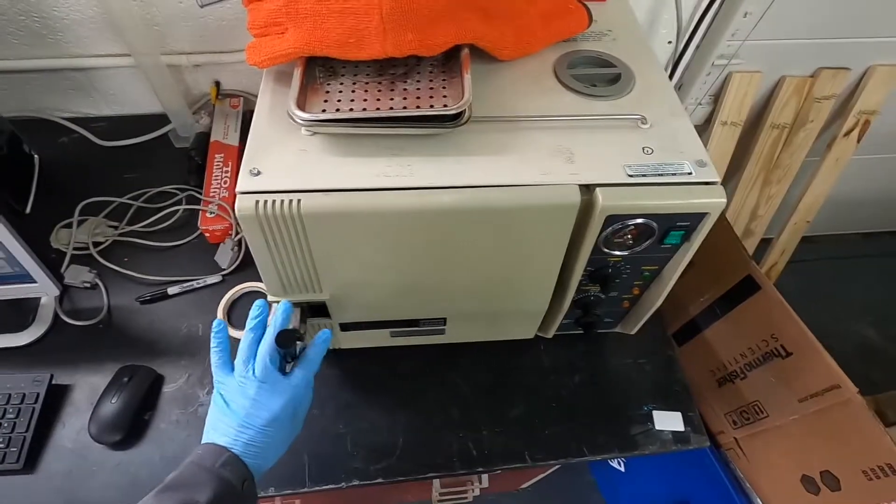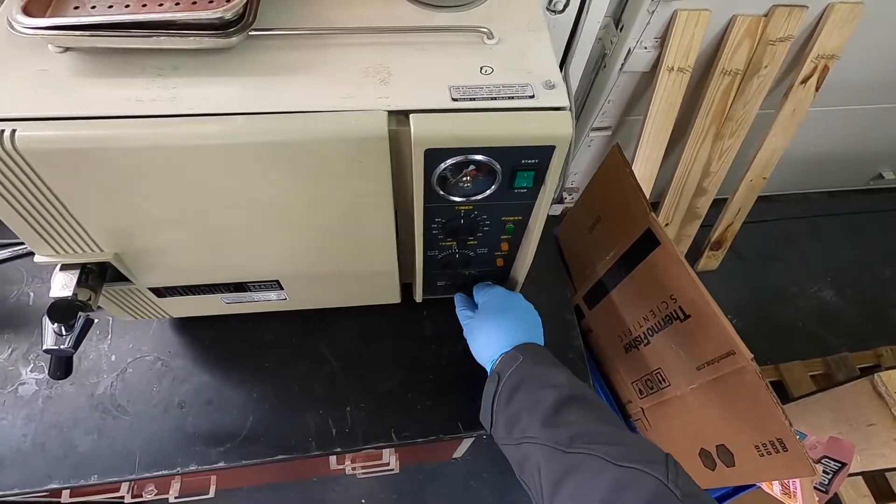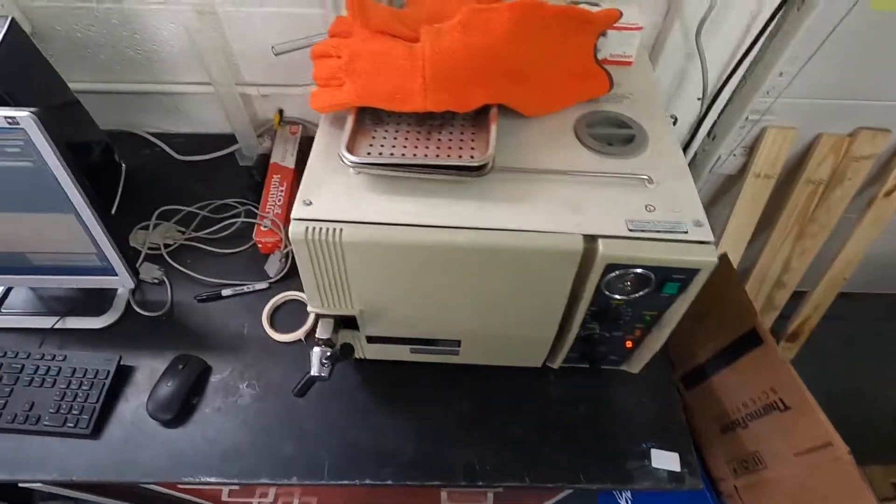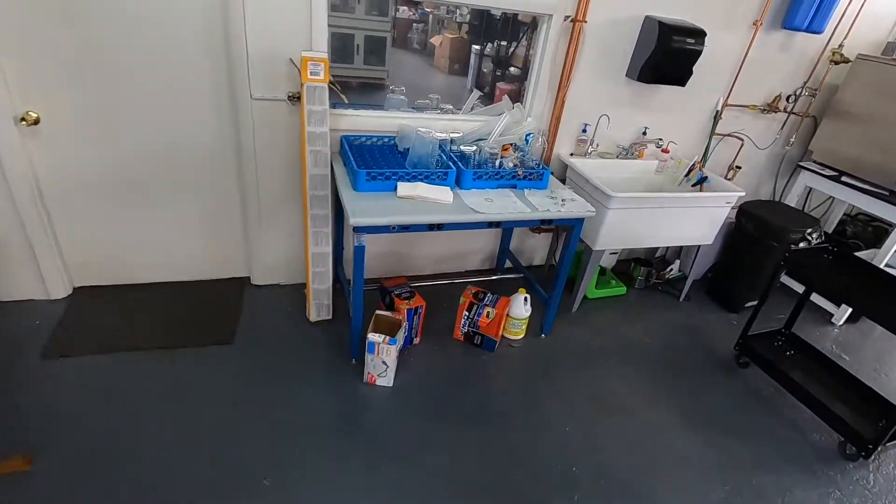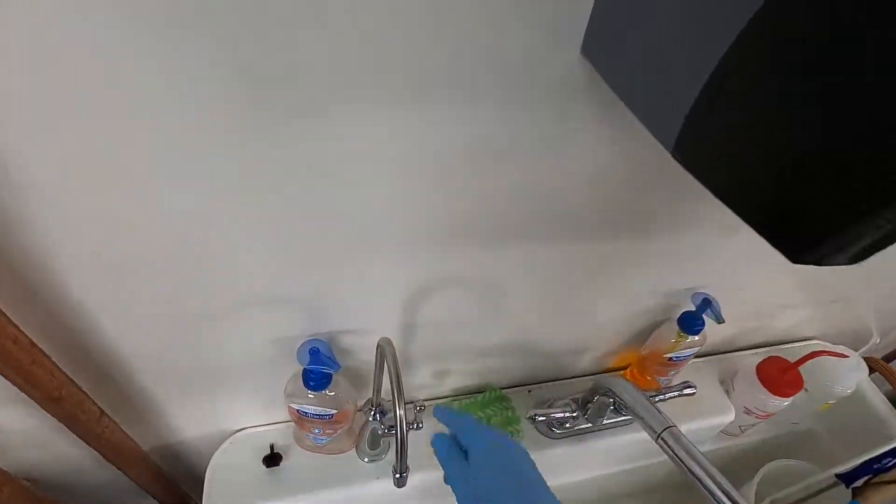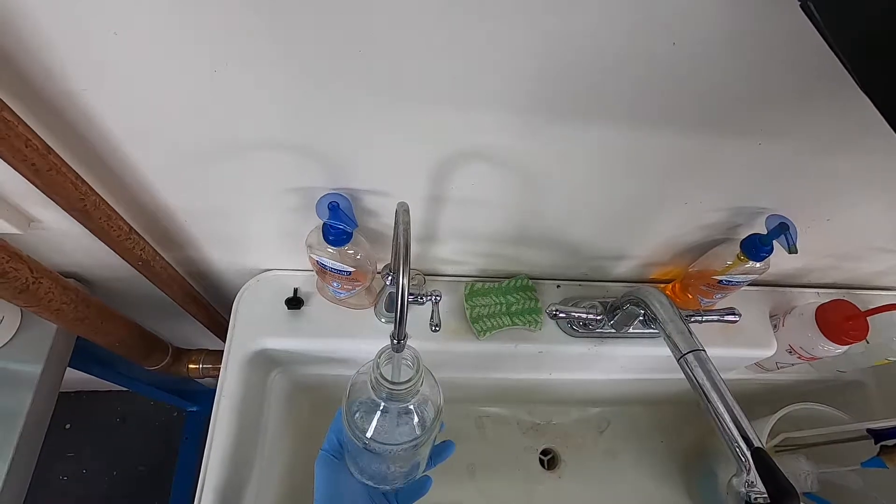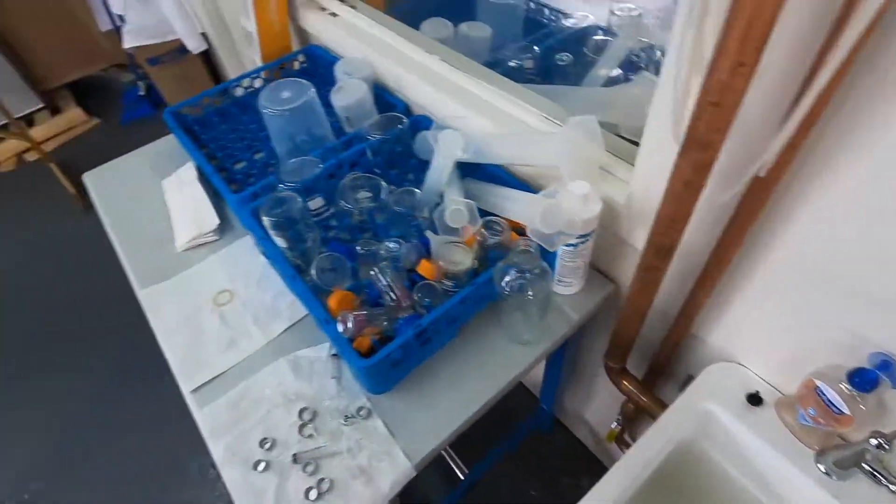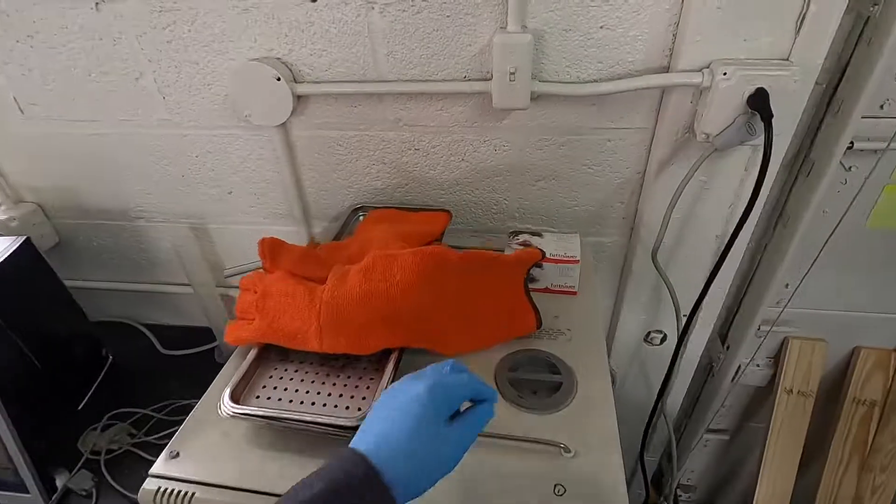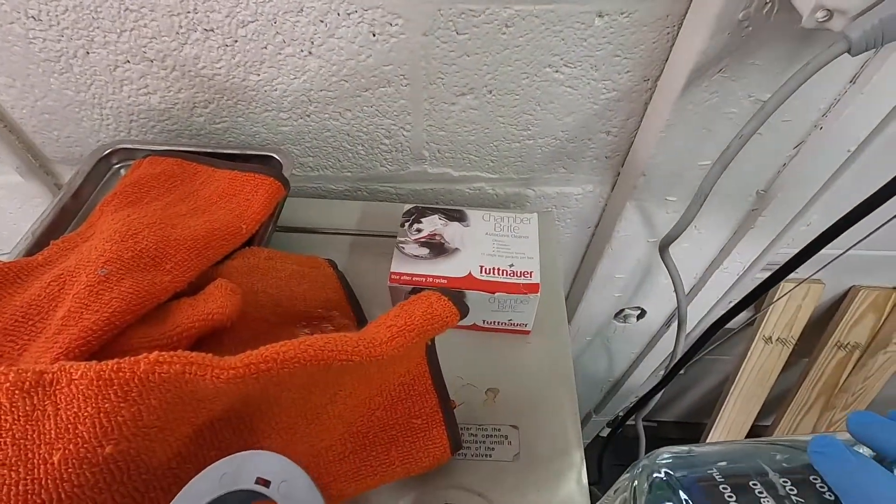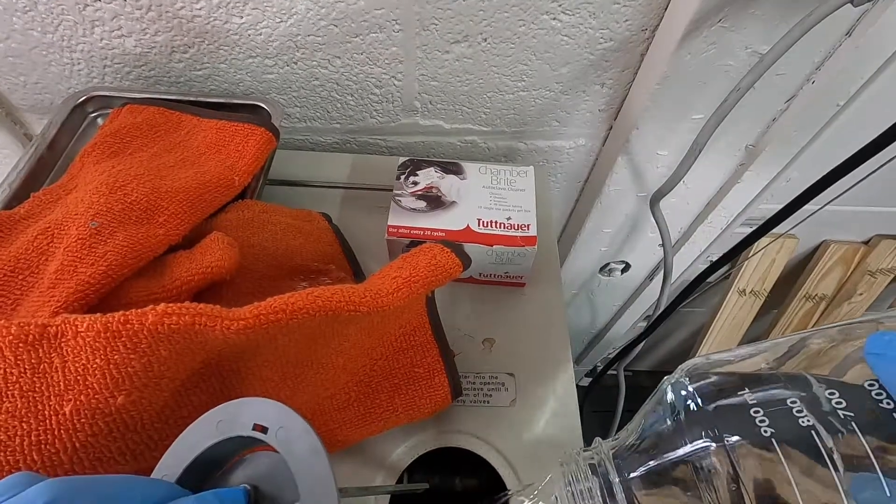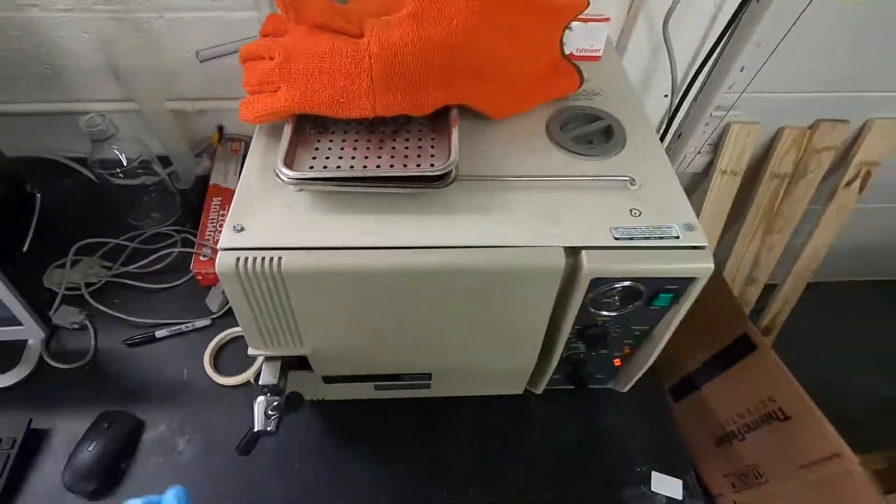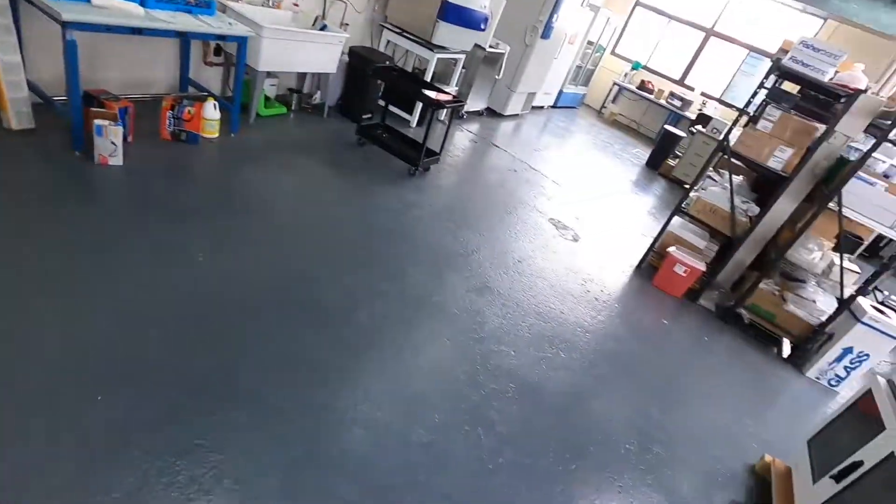So we'll close this. This is set to autoclave. We'll set the timer to 45 minutes. We'll hit start. We reset the pressure gauge. And just to do the right thing, we're gonna fill up some water and put this into the reservoir.